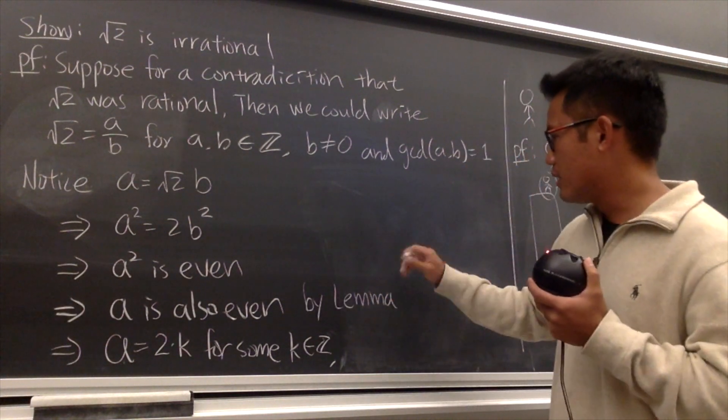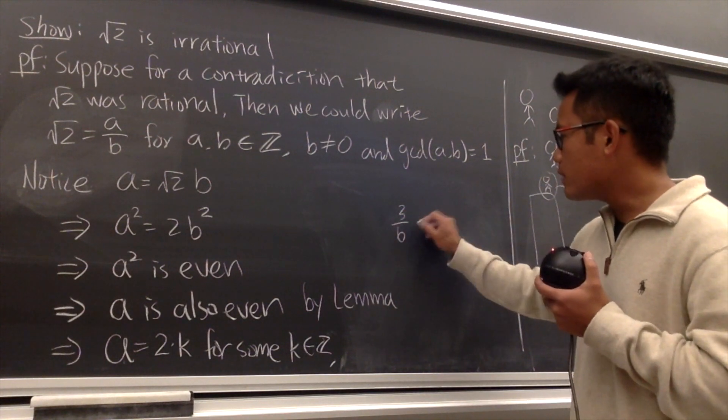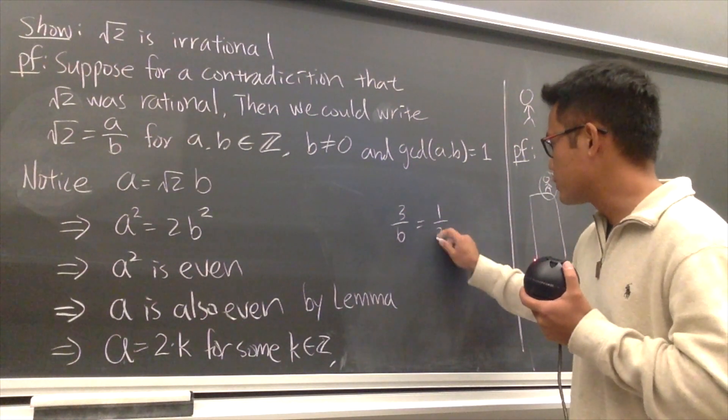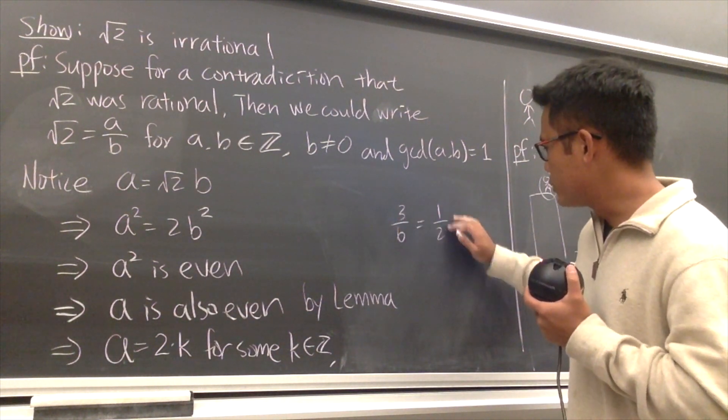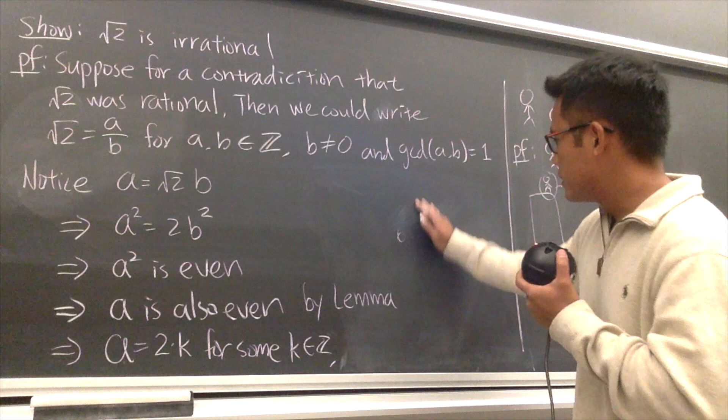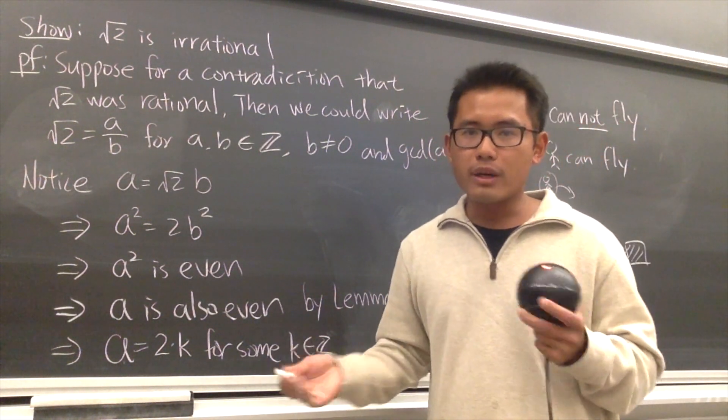Suppose you have a fraction, let's say 3 over 6. You don't need to write 3 over 6, because you can always write it as 1 half. So that's the idea. Once you reduce to the lowest term, then the greatest common divisor is just 1. Anyway, that's the prep work, and now here's the computation.